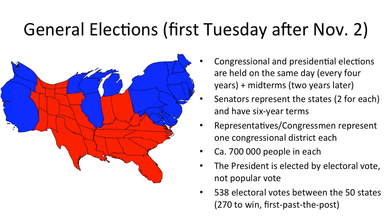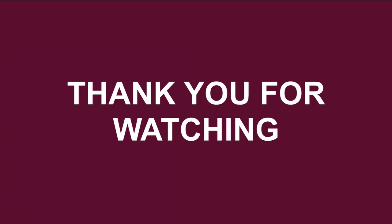This map shows the 2004 election. The blue is the Democratic candidate John Kerry, who lost. The red was George W. Bush, who won in 2004. This stretched map shows the more electorally heavy states as larger. Thanks for watching, and my next video is on American Party politics, so make sure you catch that one as well.